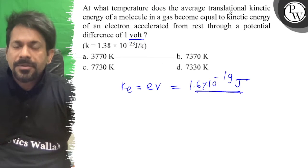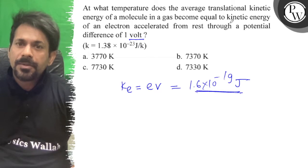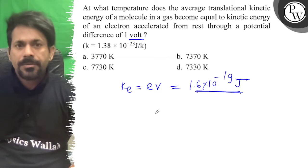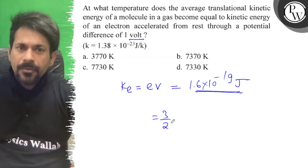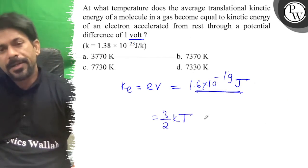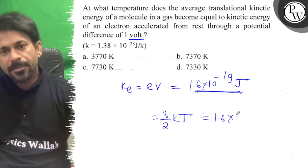Now, at what temperature does the average translational kinetic energy of a molecule in a gas become equal to the kinetic energy of the electron? So 3 by 2 of kT, this is the kinetic energy of the molecule, and this is 1.6 into 10 to the minus 19.